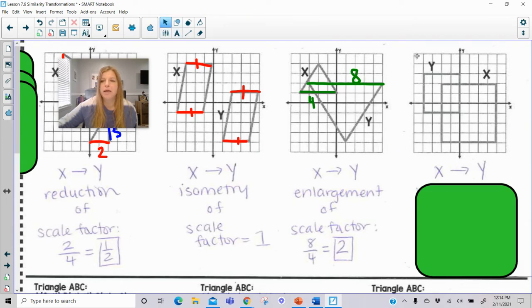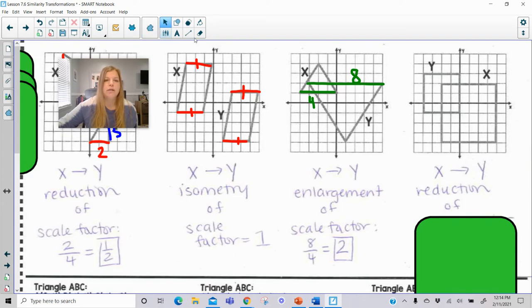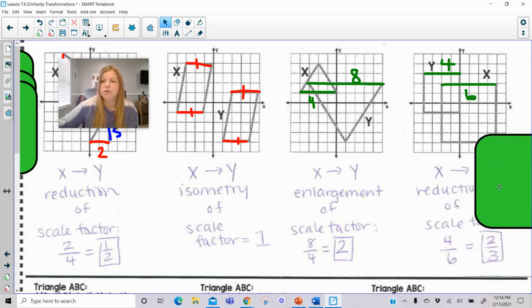Here from X to Y, the figures are definitely getting smaller. So that's a reduction. To go from a length of 6 to a length of 4, I'm really multiplying by 4/6, which is 2 thirds.